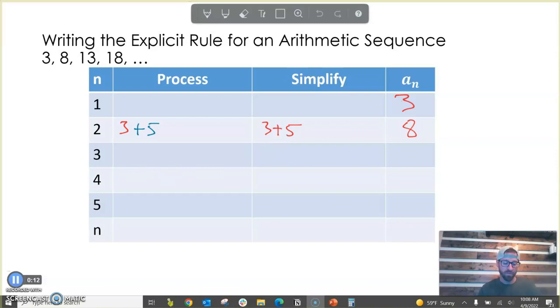Now, for our third term in the sequence to get the 13, what we did is we took our previous value, and we added 5 to it again. So we took our previous value, which we can represent with 3 plus 5, and then we add 5 one more time. And if I wanted to simplify that, 5 plus 5, repeated addition, can be shown as multiplication, 5 times 2.